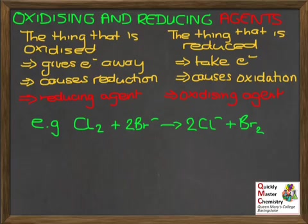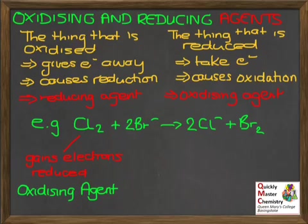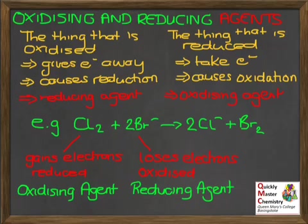Let's look at an example: the reaction between chlorine and bromide ions. Chlorine goes to chloride ions, bromide ions turn into bromine. The chlorine gains electrons to make chloride ions — it is itself reduced, and that makes it the oxidizing agent. The bromide ions lose electrons to make bromine — they are themselves oxidized, and that makes them the reducing agent. So whatever is oxidized is the reducing agent; whatever is reduced is the oxidizing agent.